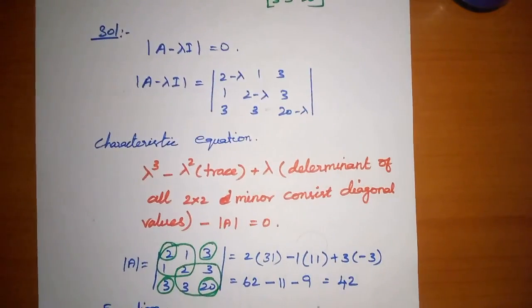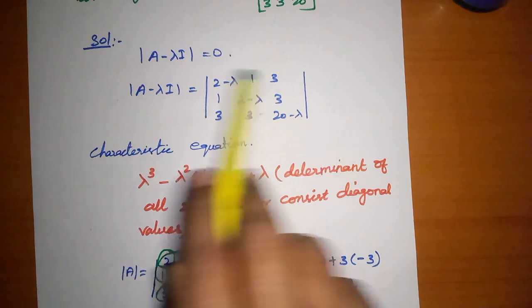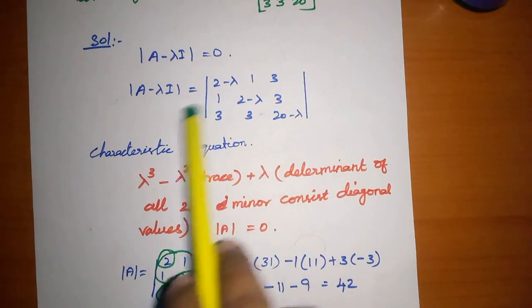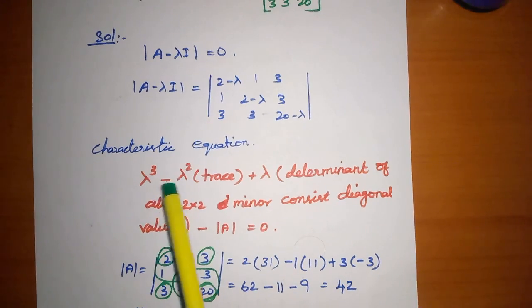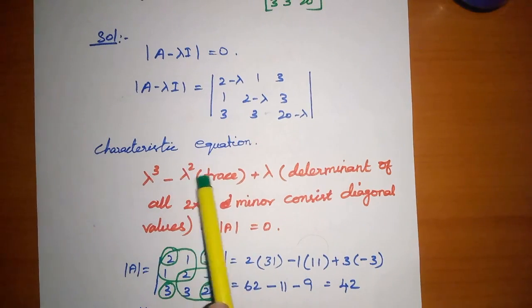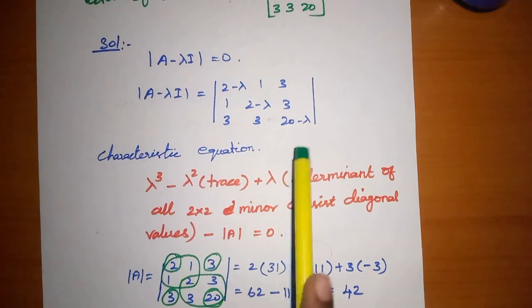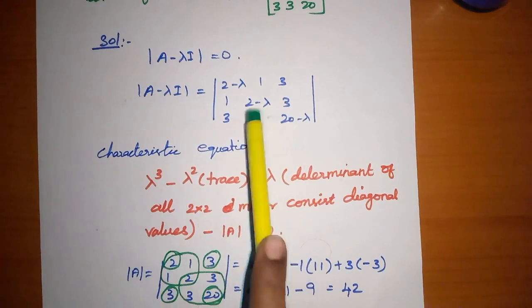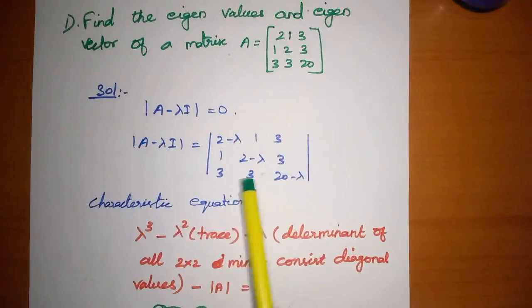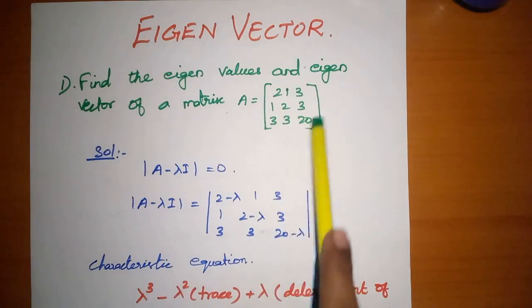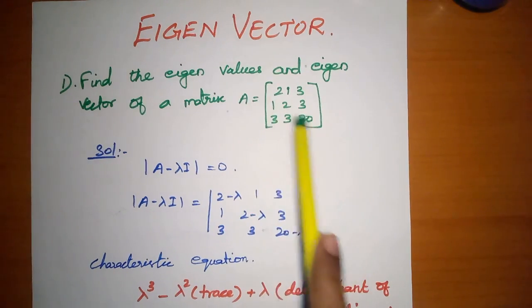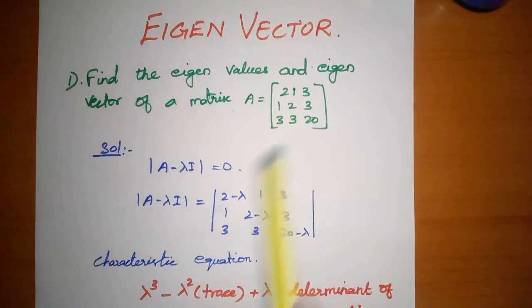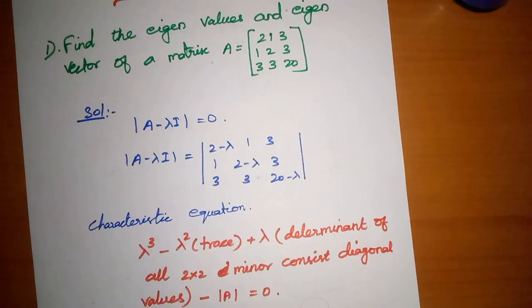The characteristic equation is defined by: lambda cubed minus lambda squared into trace. The trace is the sum of the diagonal elements of matrix A.